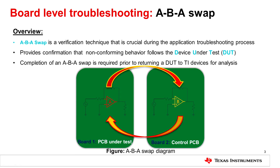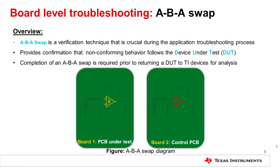In this example, we will follow two units between two PCBs. As you can see, the devices are swapped between PCB A and PCB B. We then can verify the electrical results and return the devices to the original PCBs to confirm if the non-conforming behavior follows that device under test.